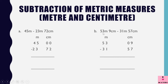Here, we are subtracting 31 meters 57 centimeters from 53 meters 9 centimeters. This is one quantity and this is another quantity. So 53 meters 9 centimeters we write as 53 meters 09 centimeters, and 31 meters 57 centimeters we write as 31 meters 57 centimeters. Remember, in the centimeters column we are having two columns.